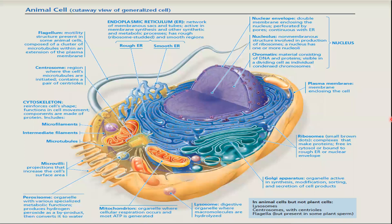Before we start with the topic, I want to give you a quick revision of the cell — the structure of the cell. This is the structure of an animal cell. In the center you can see the nucleus. The nucleus consists of a nuclear envelope, a double membrane enclosing the nucleus, perforated by pores and continuous with the endoplasmic reticulum. The nucleolus is also present here — this dark condensed body is the nucleolus, a non-membranous structure involved in production of ribosomes.